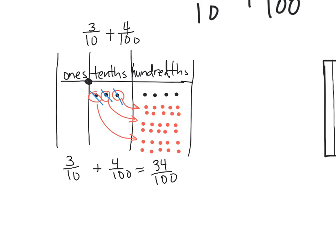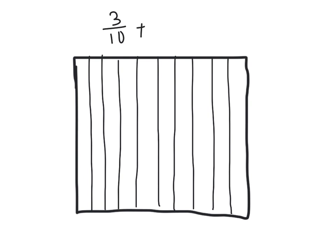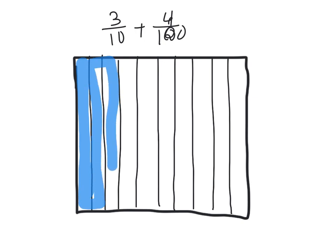Another way we could do it is by using the area model. We write down 3 tenths plus 4 hundredths. The first thing we do is shade in 3 tenths — there's 1 tenth, 2 tenths, and 3 tenths. So there is our shading of 3 tenths.